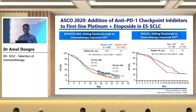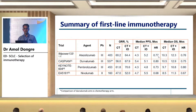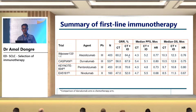Looking at the other two phase 3 trials: adding pembrolizumab to chemotherapy improved OS at 10.8 months versus 9.7 months with a hazard ratio of 0.80 (Keynote 604), and EA-5161 — addition of nivolumab to chemotherapy — shows median OS of 11.3 months compared to 8.5 months with a hazard ratio of 0.67. Summarizing these four important trials, the overall response rate is around 65 to 70%, median PFS in the range of five to six months, and median OS in the range of 11 to 12 months.